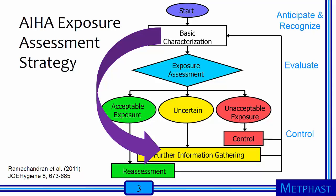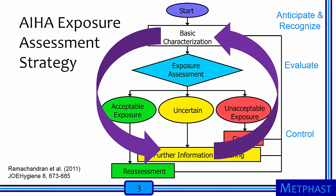If acceptable, exposures can be reassessed periodically, for example quarterly, or after processes are changed. If uncertain, then further information should be gathered, which would likely include more sampling. If unacceptable, controls should be put in place and then exposures reassessed. The process then returns to the starting point, forming a continuous loop with increasing confidence in understanding of workplace exposures.